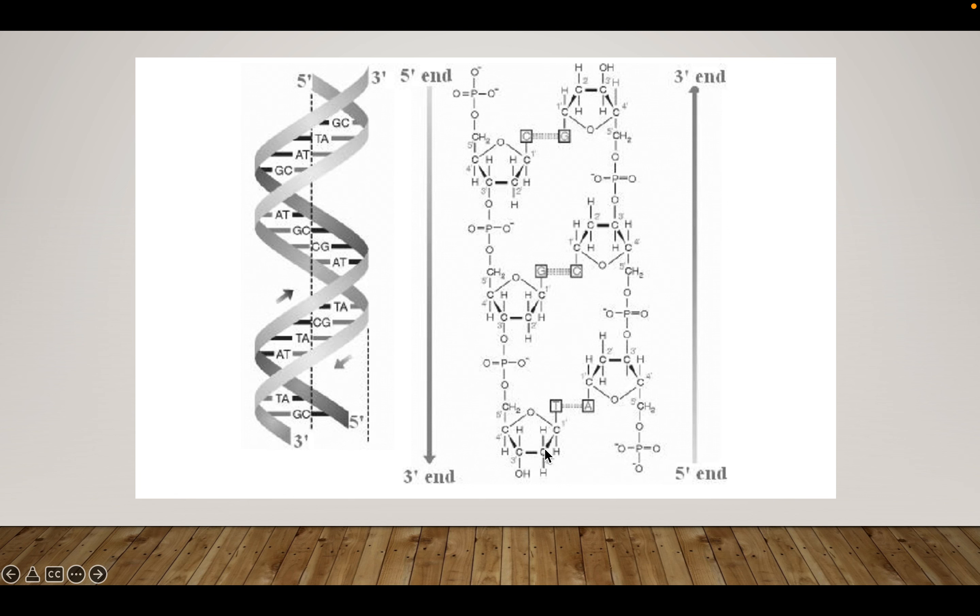You have the same thing here. You have a one, two, three, four, and five. So this end up top is the five prime, where the phosphate group is going to hang off here. And then you have a one, two, three prime here, which is where this hydroxyl end, OH, is a functional group called a hydroxyl group. So three prime contains the hydroxyl end, five prime contains the phosphate end.